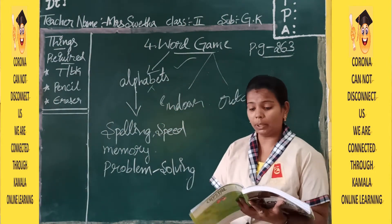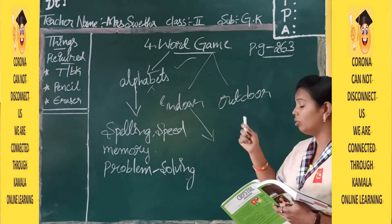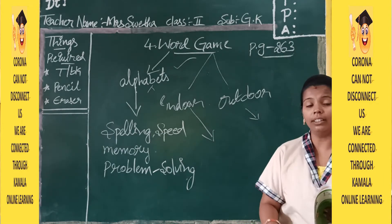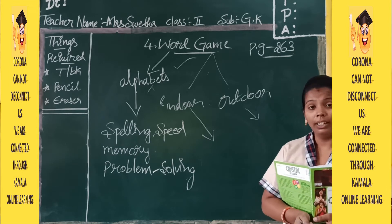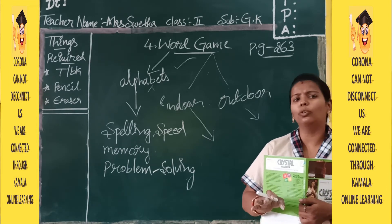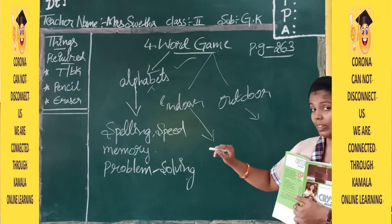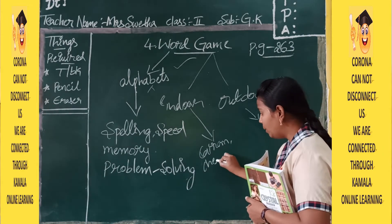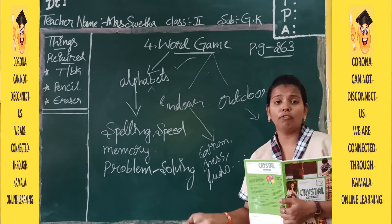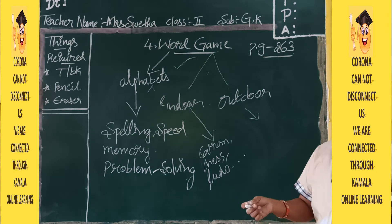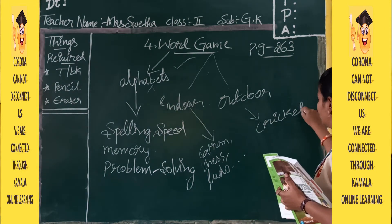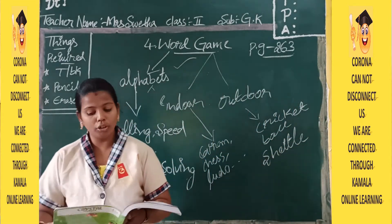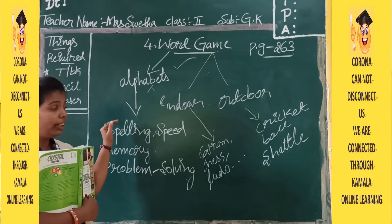But it should be only to the limited part. Now, some indoor game examples: you will have carrom, chess, and ludo — by sitting in one place. And outdoor games like volleyball, cricket, and shuttle help your body. So many outdoor games are there which help your body.